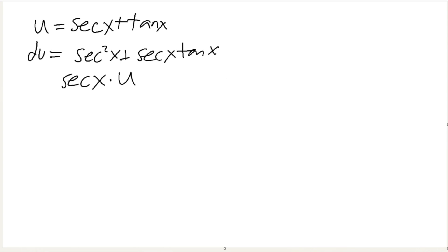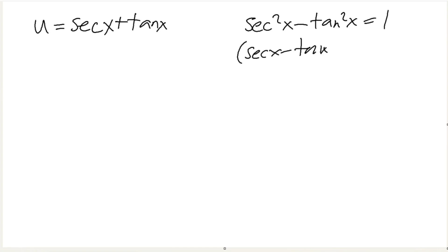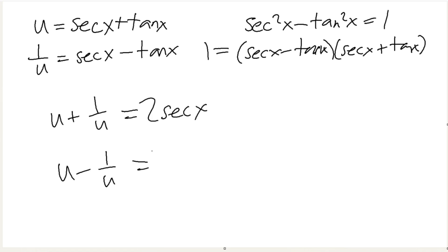Just want to give you this idea. Another cool thing is that notice that secant squared of x minus tangent squared of x equals 1, because tangent squared plus 1 is secant squared. So we can factor this out, and this is equal to 1. That means if u equals secant x plus tangent x, then 1 over u equals secant x minus tangent of x. So sometimes we can use u plus 1 over u — which gives us 2 secant of x — and u minus 1 over u, which gives us 2 tangent of x. This is the secret secant trick.